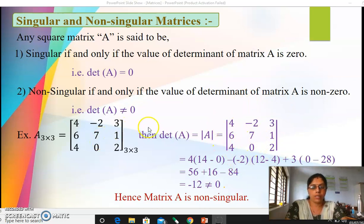So let's expand it. 4 into this is 14 minus 0. Next minus of minus 2, minus is the sign of expansion here. So minus of minus 2 will be plus, then 12 minus 4, and last plus 3 into 0 minus 28.